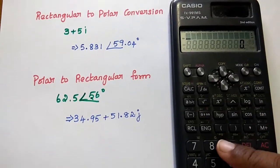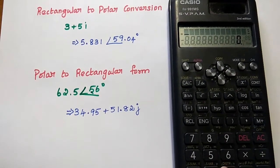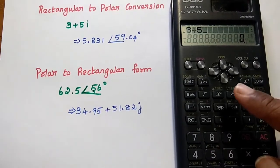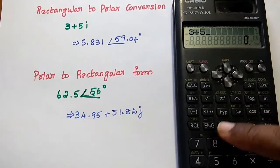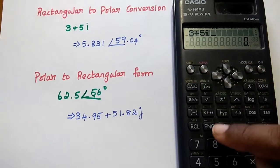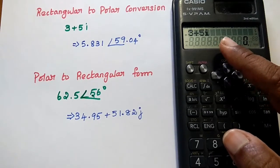The next step, we are going to type the rectangular value as such, that is 3 plus 5i. i can be represented using the term SHIFT plus ENG. SHIFT and ENG, you can get the imaginary value i.